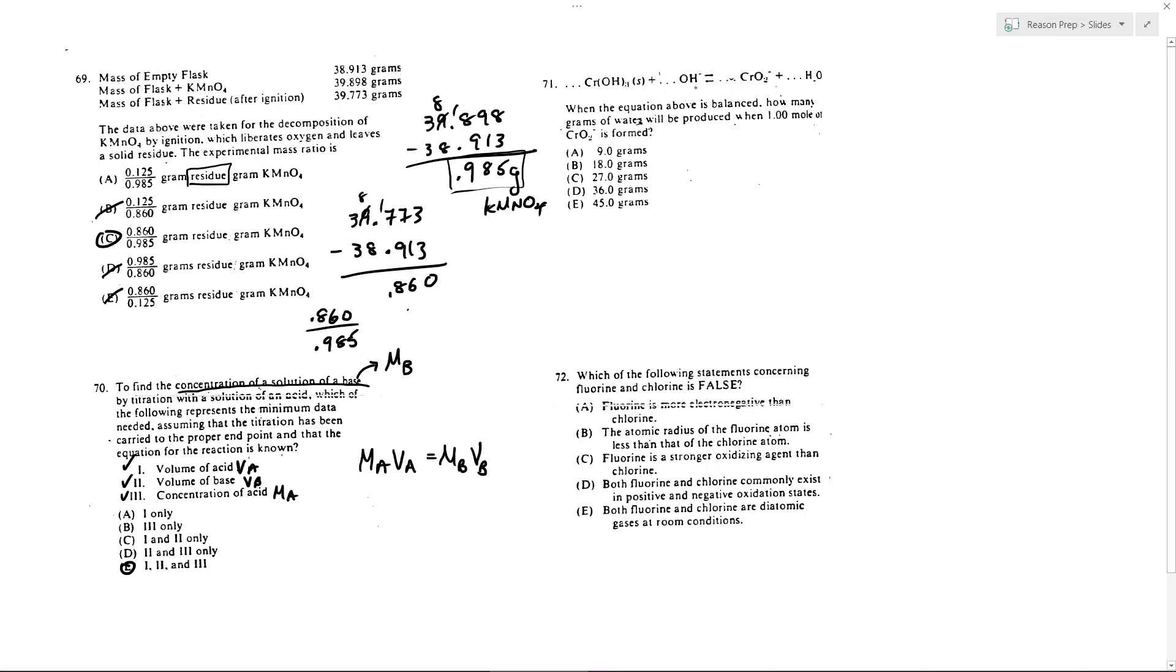When the equation above is balanced, how many grams of water will be produced when one mole of CrO2- is formed? So first, let's balance this. I've got one Cr, one Cr. I've got, let's see, I'll do the H's first. I've got four H's on the left. So I'll need to put a two here to get four H's on the right.